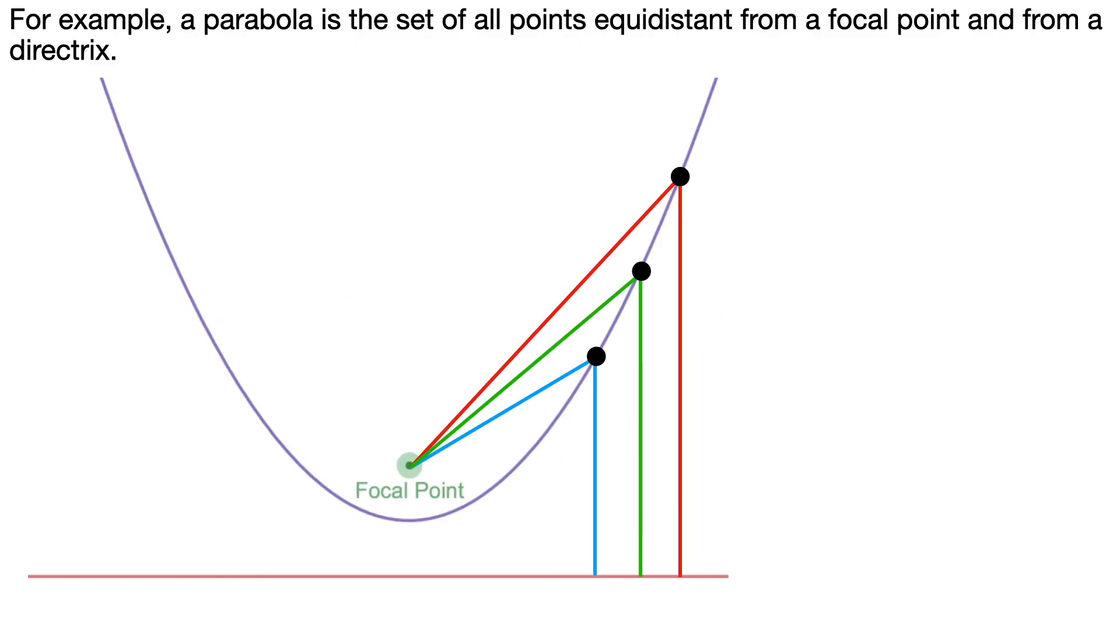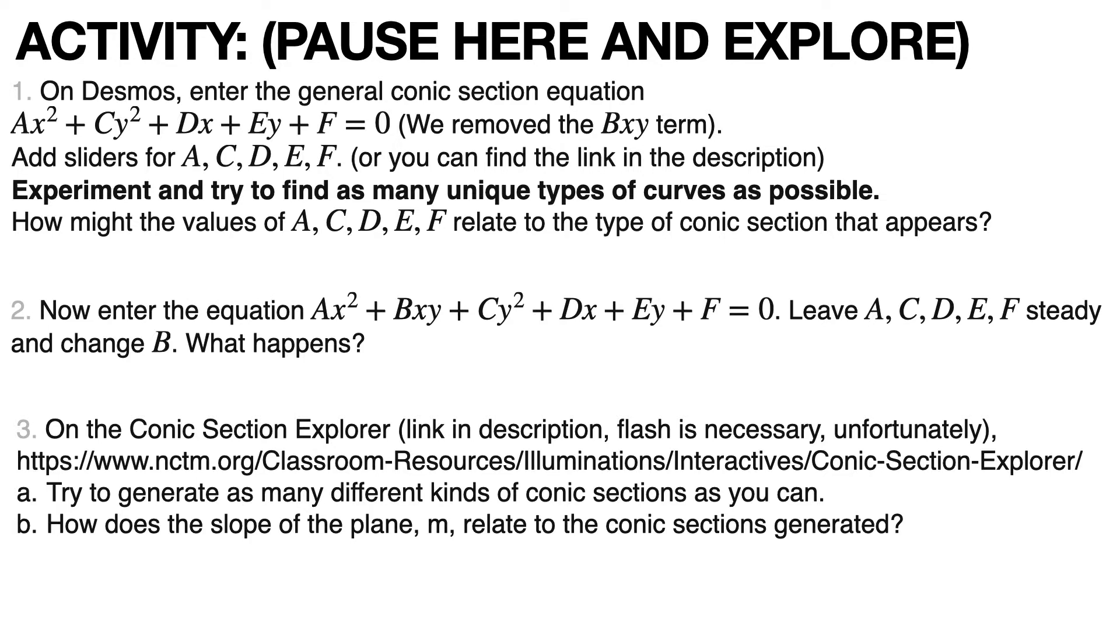For example, a parabola is the set of all points equidistant from a focal point and a directrix, so every point in that curve has the same distance from a focal point and a line, and different conic section types have different definitions that relate focal points and directrix.